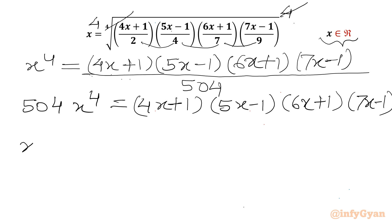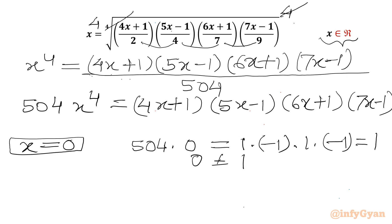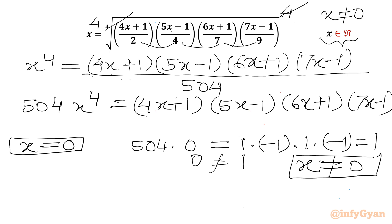Now we will multiply both sides with 504, giving 504x⁴ = (4x+1)(5x-1)(6x+1)(7x-1). If we plug in x = 0, LHS becomes 0 but RHS becomes 1, which is not equal. So we can conclude x cannot be 0 for our equation.